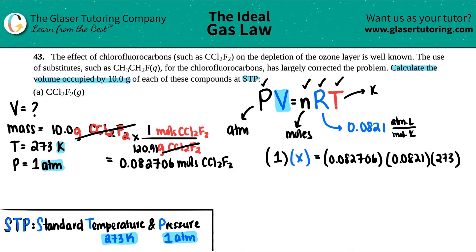If we want to get X by itself, we just have to divide by one, which basically means we don't have to do anything because anything divided by one is itself. But just to show you, that will cancel this out. Now we have X equals 0.082706 times 0.0821 times 273.